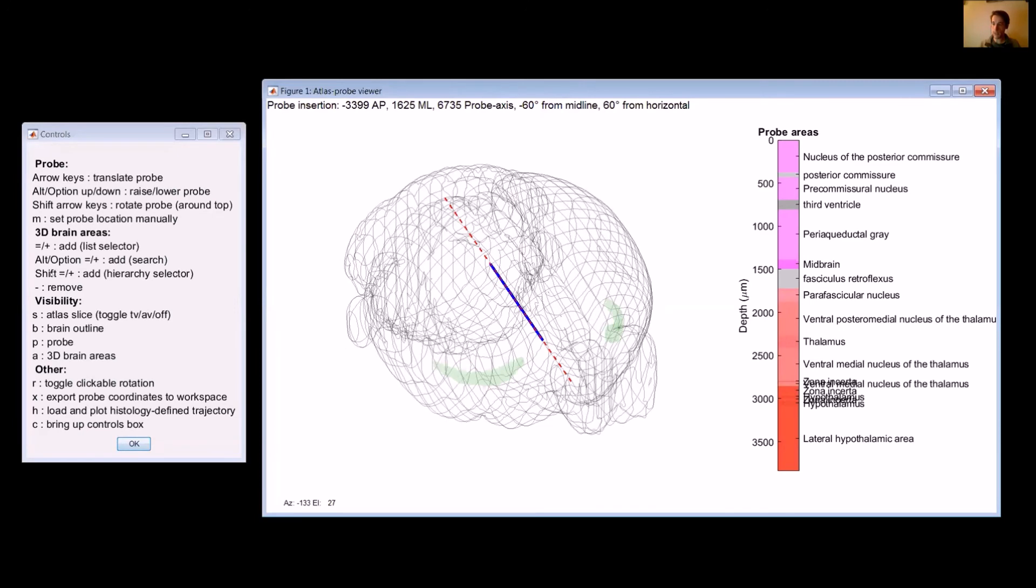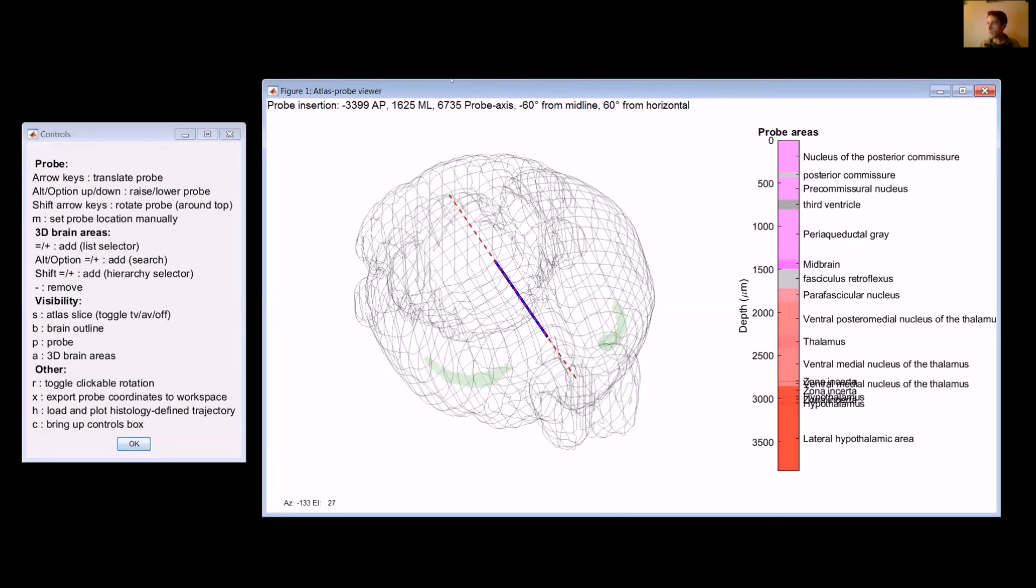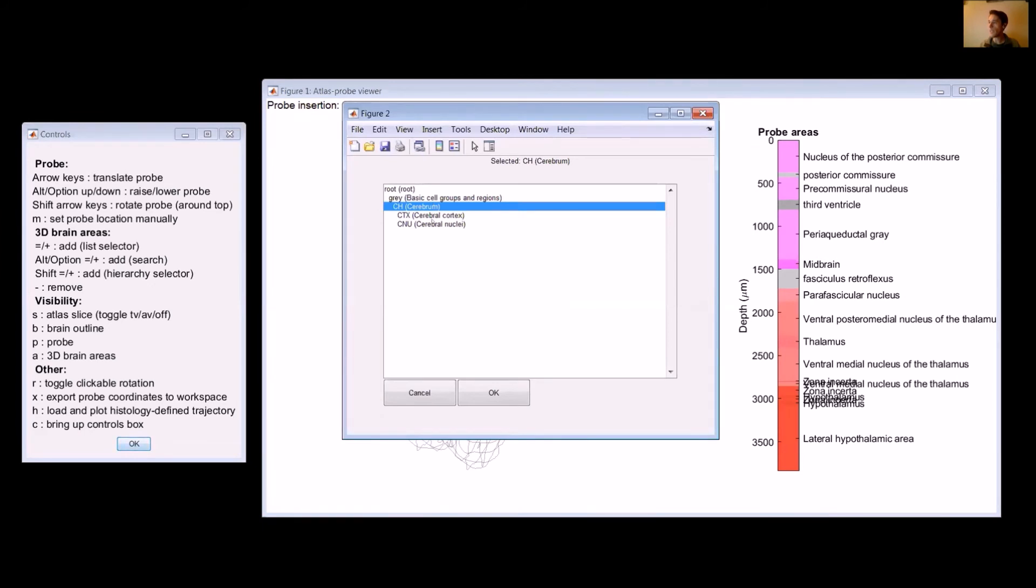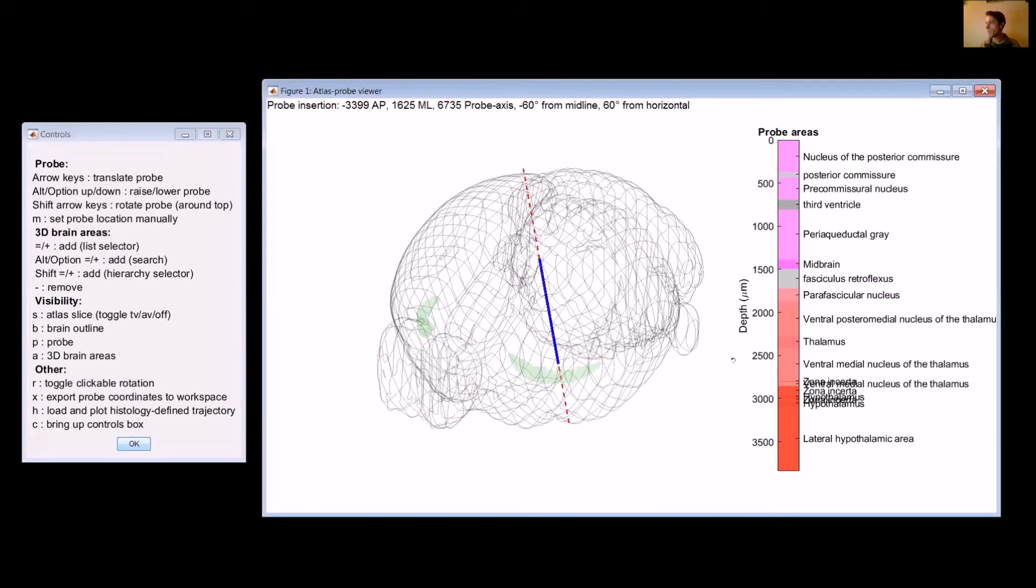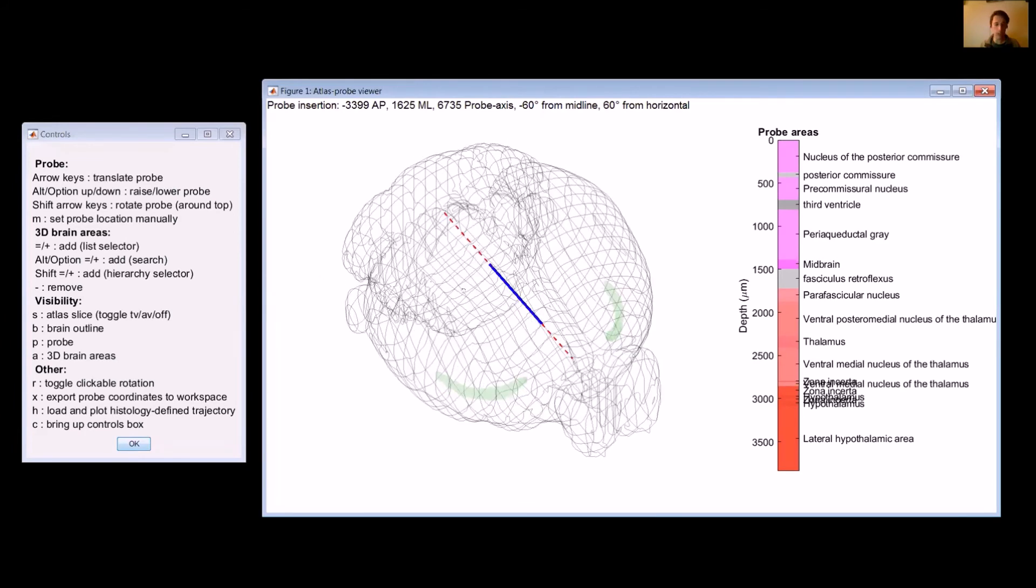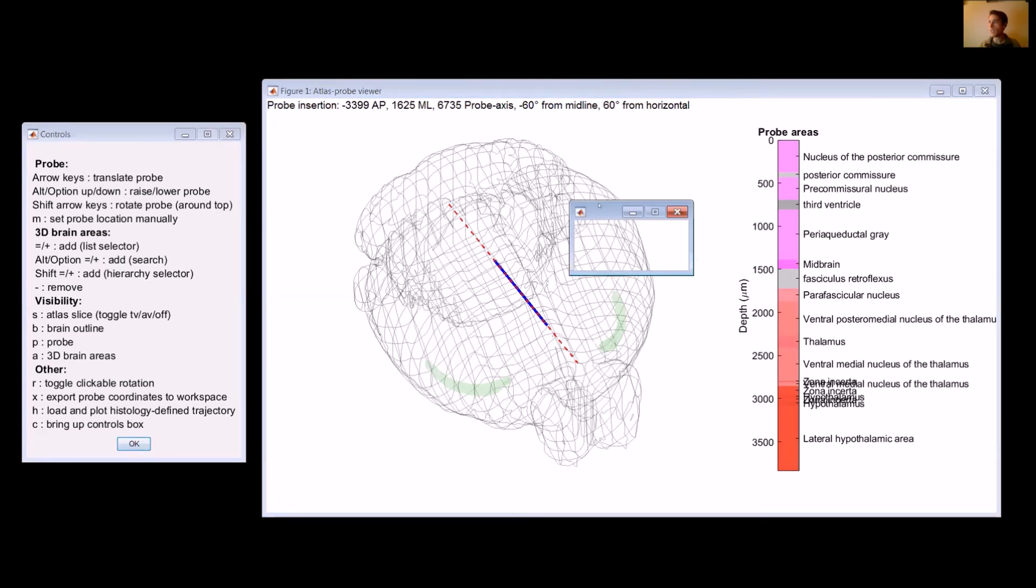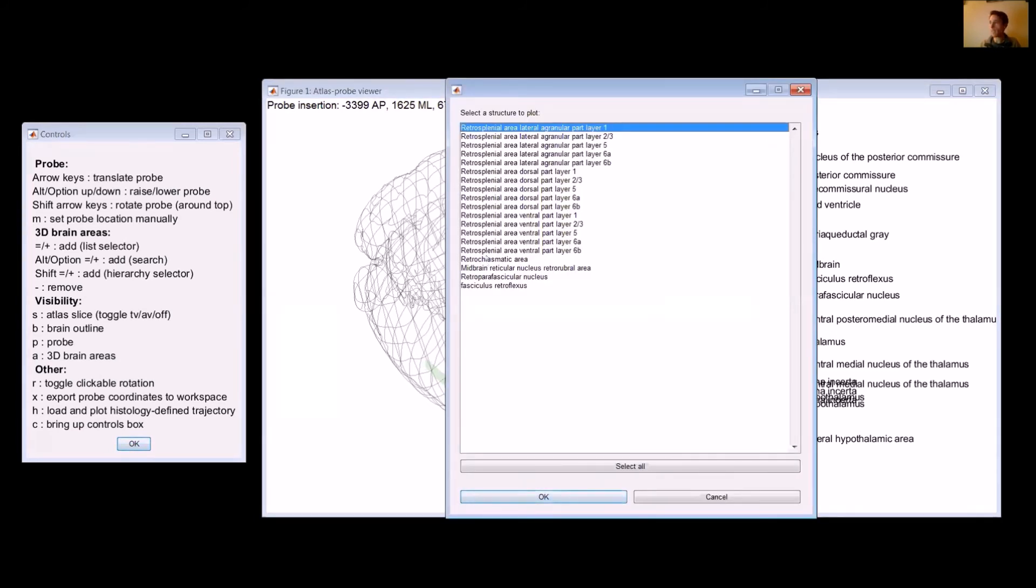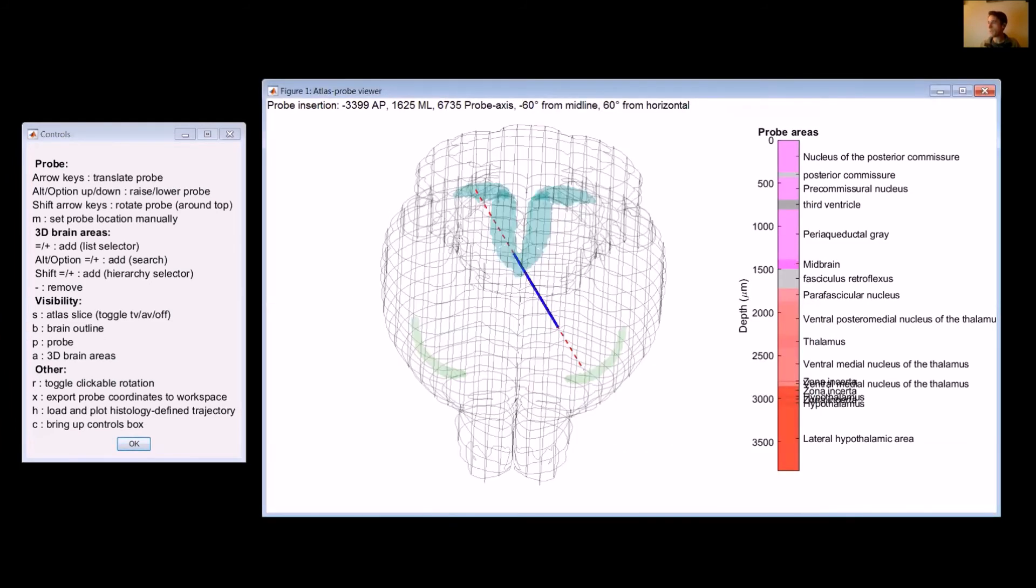You can also hold shift plus. And that brings up this hierarchy selector. In this case, you can go through each one of these categories. And then it'll show you how the Atlas categorizes these things. And then you'll be able to pick an area. So I just picked some random thing, but it goes down to the subiculum. We can pick that, which might not be close. So that was a bad choice, but whatever. The final thing is that if you hold alt, and then you do plus, you can also search for things. So let's say I want to search for anything with the name retro in it. Then it'll return retrosplenial, retrochiasmatic, whatever. So let's say we want to put in the retrosplenial. So then it'll show you the retrosplenial cortex. So that's how you add things.